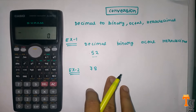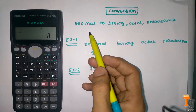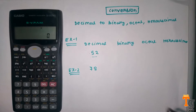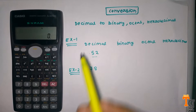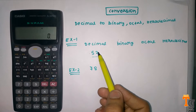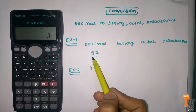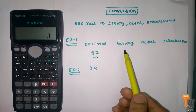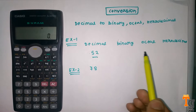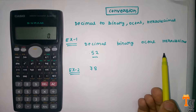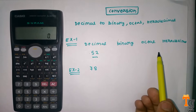Hello guys, welcome to my channel TechGate. In this video I am going to tell you how you can convert your decimal number to binary, octal, or hexadecimal form. Here you can see the first example and the number is 52, and now I am going to convert this number into binary, octal, and hexadecimal.